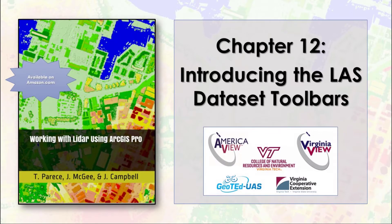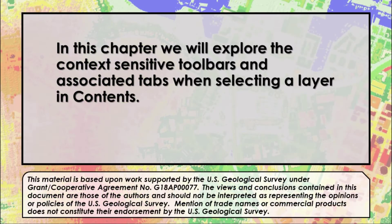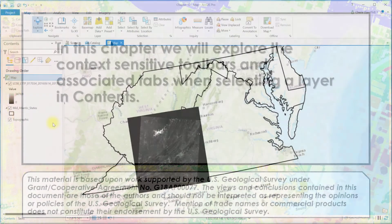Numerous geoprocessing tools are available in any GIS for vector, raster, or LiDAR point cloud data. With ArcGIS Pro, many of these tools are context sensitive. They activate when a vector, raster, or LiDAR point cloud has been selected in the contents. The tools associated with the selected data type appear on the title bar, accompanied by one or more tabs of its own, grouped within the new toolbar.